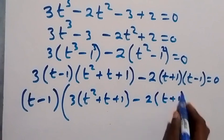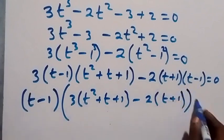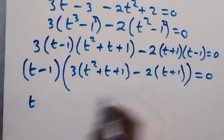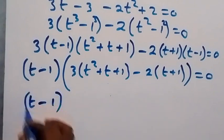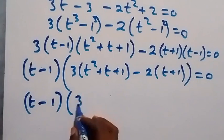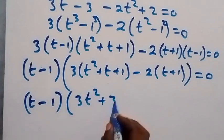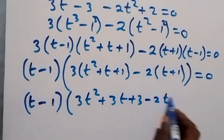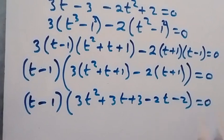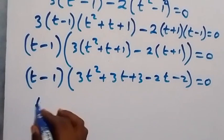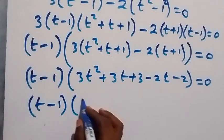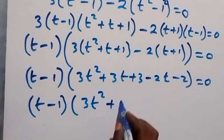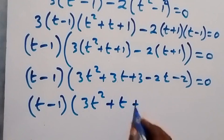Factoring out the common (t minus 1), we have (t minus 1) times the bracket 3(t squared plus t plus 1) minus 2(t plus 1) equals 0. Expanding: 3t squared plus 3t plus 3 minus 2t minus 2, which simplifies to (t minus 1)(3t squared plus t plus 1) equals 0.